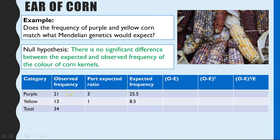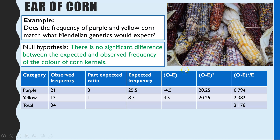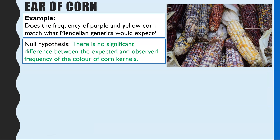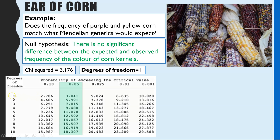We now have our observed and expected frequencies and can carry out the stages of chi-squared. Observed minus expected is squared and then divided by the expected value. The sum of that column gives a chi-squared value of 3.176 — in an exam this value would be given to you. The degrees of freedom is one, because it's the number of categories minus one (n minus one): we have two categories, purple and yellow, minus one gives one degree of freedom.